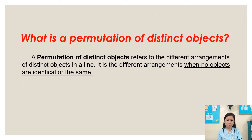What is a permutation of distinct objects? A permutation of distinct objects refers to the different arrangements of distinct objects in a line. It involves different arrangements when no objects are identical or the same.